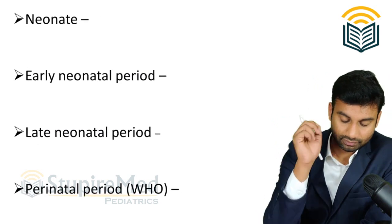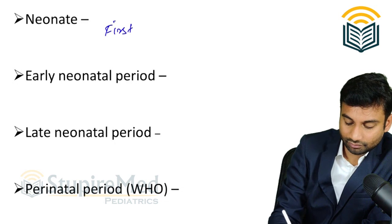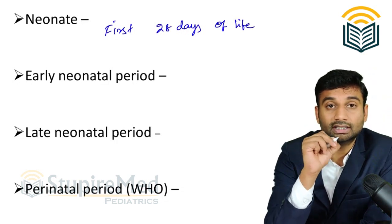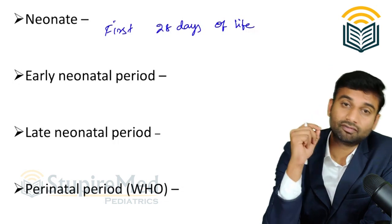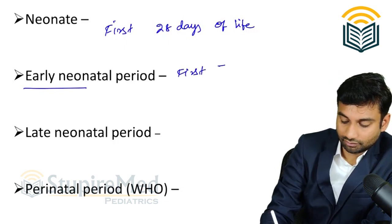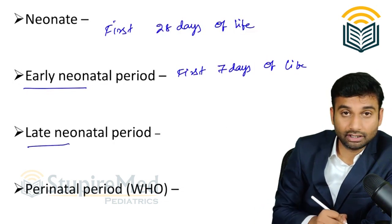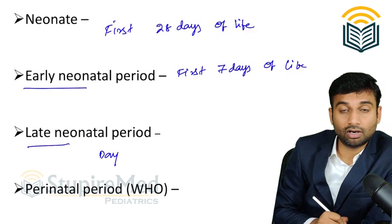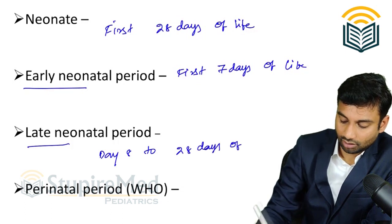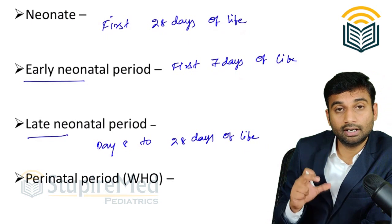Now, when do you call a neonatal baby? Neonatal babies are called from after birth through the first 28 days of life. The first 28 days of a baby's life is called the neonatal period. This is divided into two parts. The first is the early neonatal period — from birth to the first seven days of life. The second is the late neonatal period — from day 8 to 28 days of life.